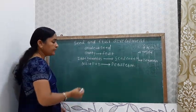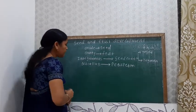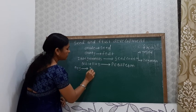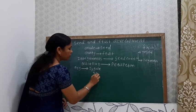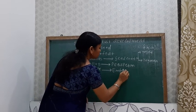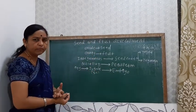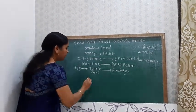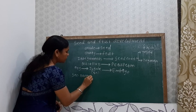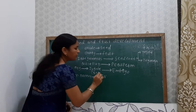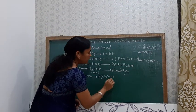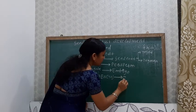Inside the embryo sac, the egg cell after fertilization converts into the diploid zygote, and this zygote then converts into the embryo. Inside the embryo sac there is also the secondary nucleus, which after fertilization converts into the primary endospermic nucleus, which then develops into the endosperm — the nutritive mass present in the seed.